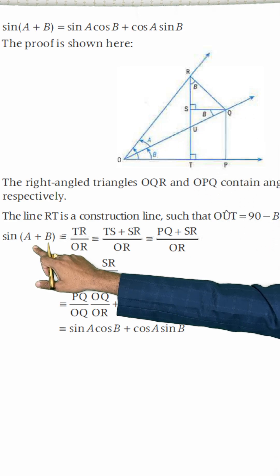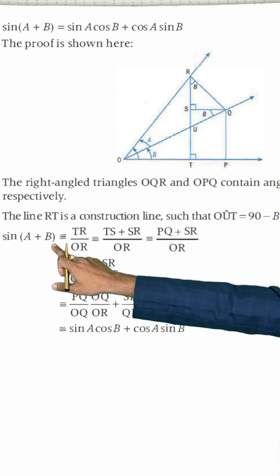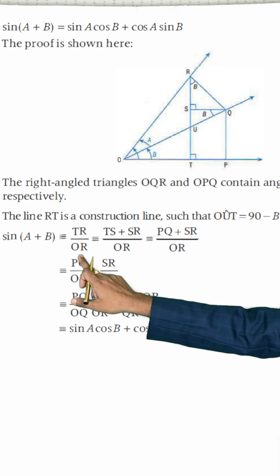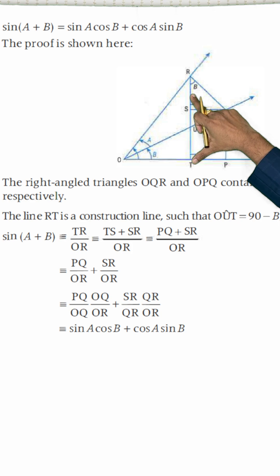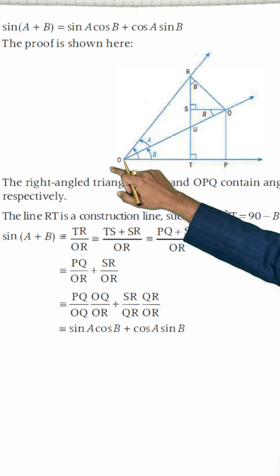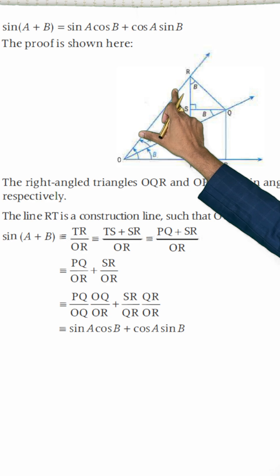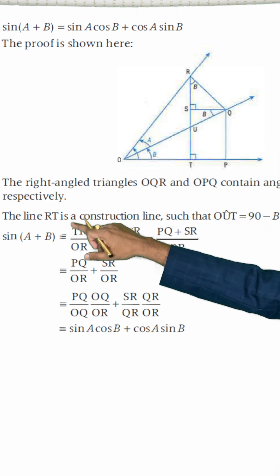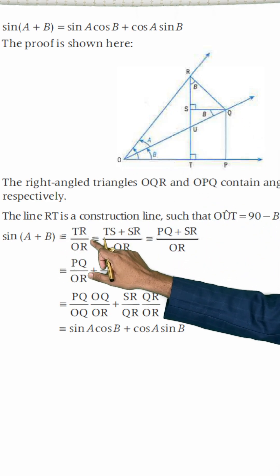Therefore, I have written here sine of A plus B, which is equal to TR upon OR. Once again, I'm telling, this is perpendicular RT and this is the hypotenuse OR. So this is your hypotenuse OR and this is RT. So then sine of A plus B, the relationship I have written here.